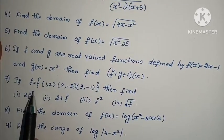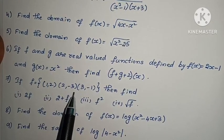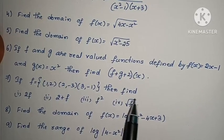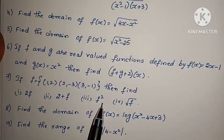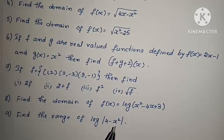Seventh one: If f = {(1,2), (2,-3), (3,-1)}, then find 2f, 2+f, f², and √f.